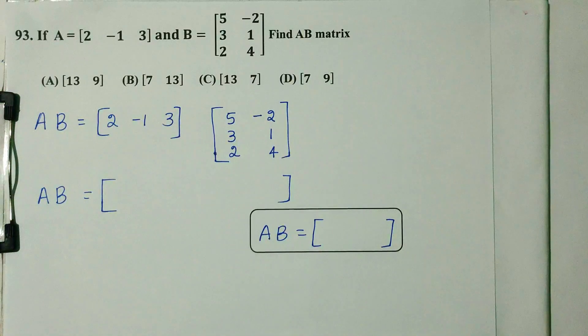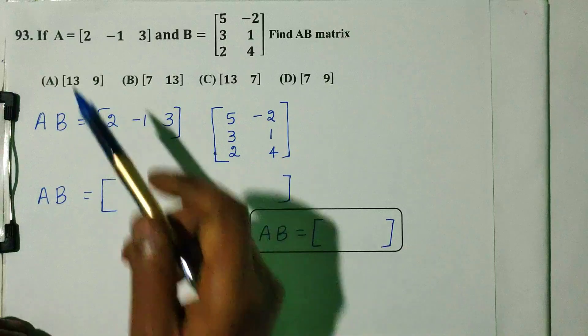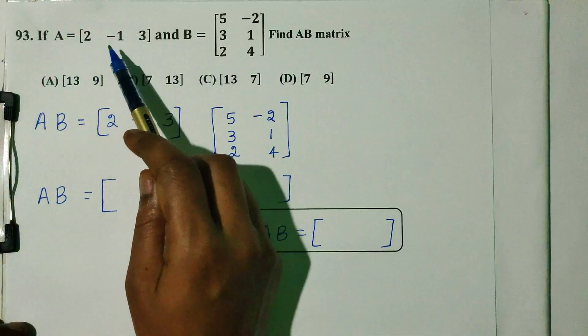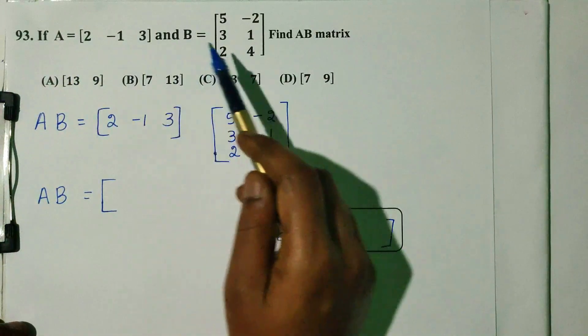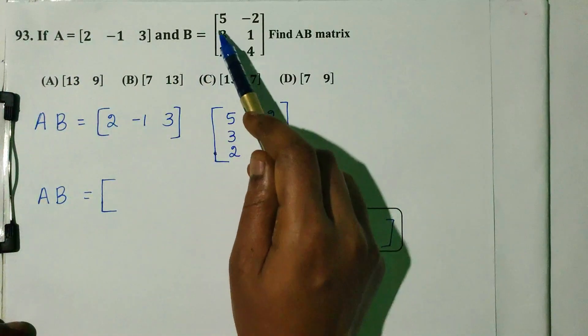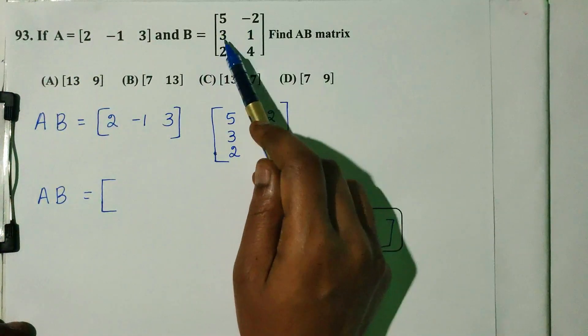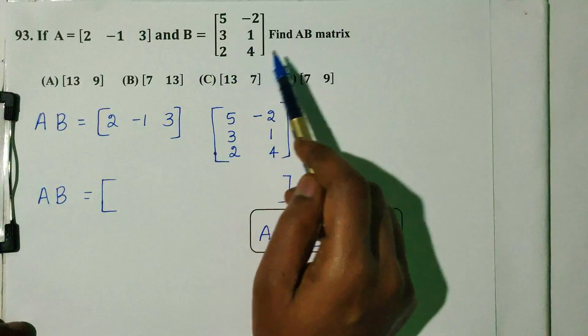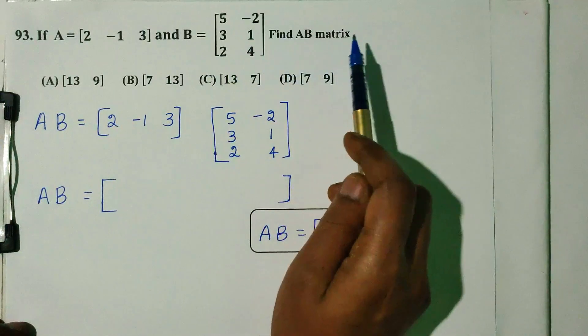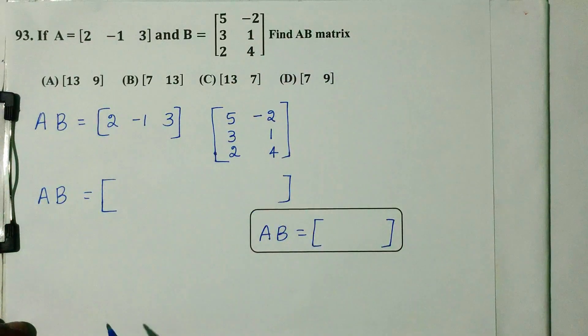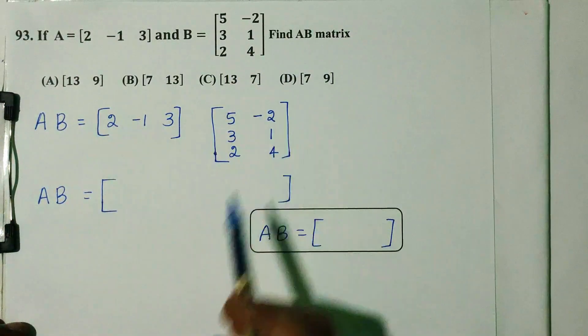Question number 93. If A is equal to [2, -1, 3] and B is equal to [5, -2; 3, 1; 2, 4], find the matrix A×B. There are 4 options, correct answer to check.